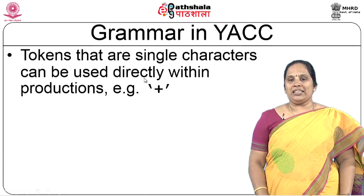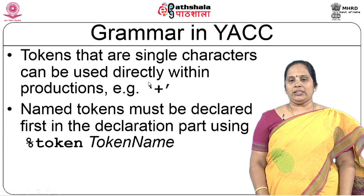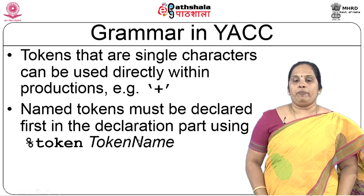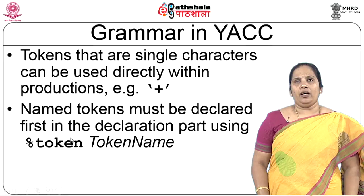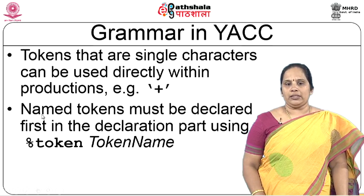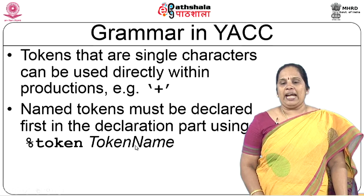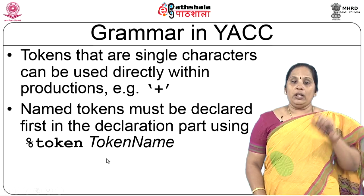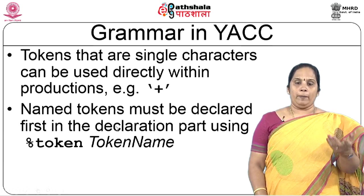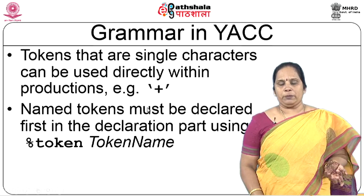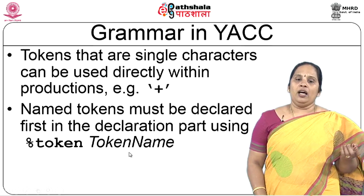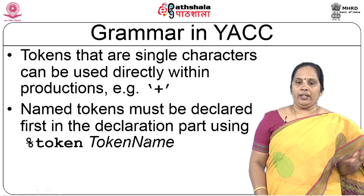Named tokens must be declared first in the declaration part using %token followed by the token name. For example, OP can represent an open parenthesis, or ADDITION_OPERATOR can represent plus. Semantic actions may also refer to values of synthesized attributes of terminals and non-terminals. Double dollar ($$) refers to the value of the LHS attribute, and dollar-i ($i) refers to the value of the i-th symbol on the RHS. For example, E: E plus T { $$ = $1 + $3; } adds the values of the first and third symbols.